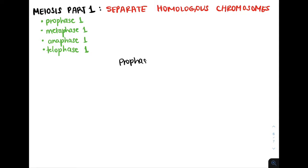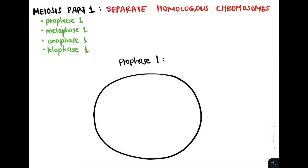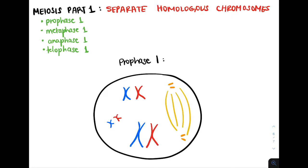Let's start with prophase I. In prophase I, we have our cell, and in our cell we're going to have pairs of chromosomes. These chromosomes are drawn in two different colors — blue and red — because there's a maternal copy and then a paternal copy for each chromosome number. The cell also has organelles called centrioles, which have spindle fibers attached to them. These pairs of chromosomes are called homologous chromosomes if they have the same genes and are the same size, but they're not necessarily identical, meaning they don't necessarily have the same alleles.